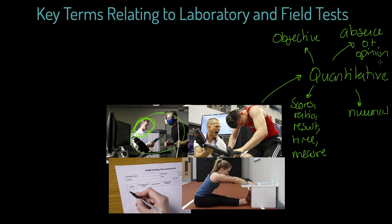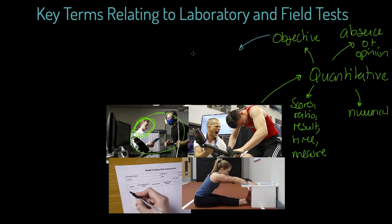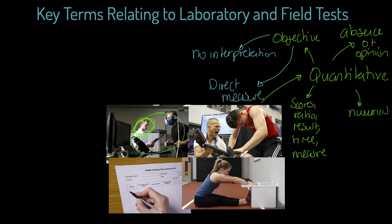Now let's take the word objective and describe what it means. Objective means there's no interpretation. You can see the link between quantitative data and objective data — they tend to be one and the same thing, and they are typically a direct measure. The direct gas analysis is a direct measure of VO2 consumption, whereas a multi-stage fitness test is a prediction of VO2 — that is not objective in that context.